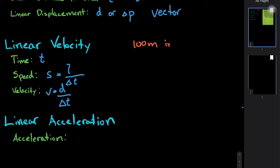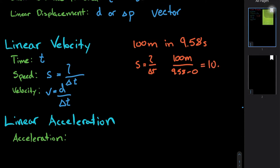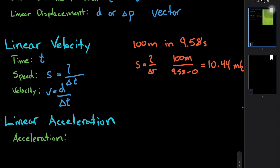Let's calculate how fast Usain Bolt was running in his 9.58-second world record for the 100 meters. So S equals L over delta T: 100 meters over 9.58 minus 0 gives us 10.44 meters per second. Because he was just running in a straight line, linear distance traveled and linear displacement are the same, so the velocity and the speed both come out to 10.44 meters per second.